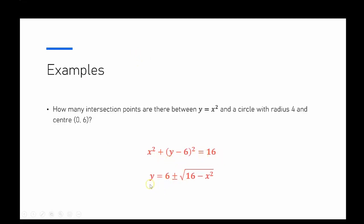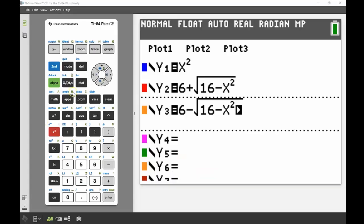Rearranging to make y the subject, it splits into two equations: y equals 6 plus the square root of (16 minus x squared) and y equals 6 minus the square root of (16 minus x squared). I'm going to input those into y2 and y3 and see how well they match the drawn circle.